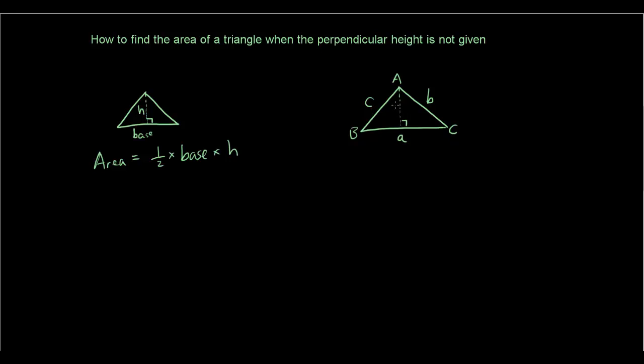And I have the perpendicular height in the middle here labelled h. Now the formula for the sine ratio is sine theta equals opposite over hypotenuse.